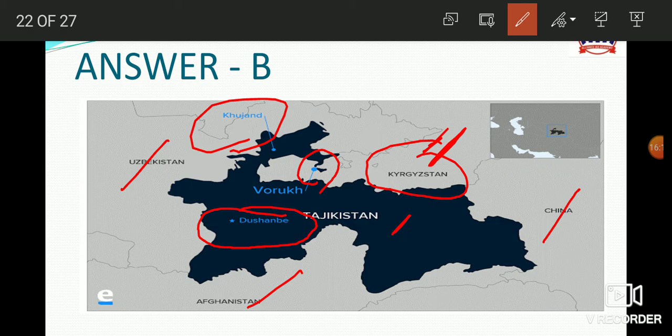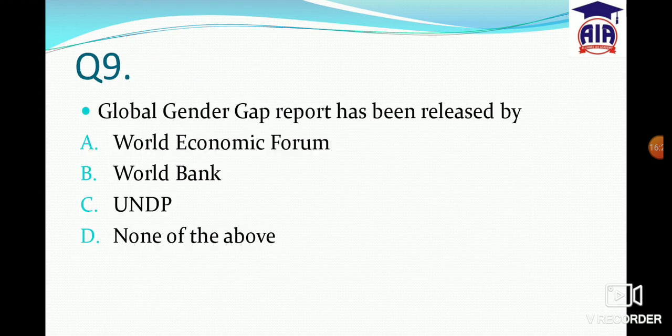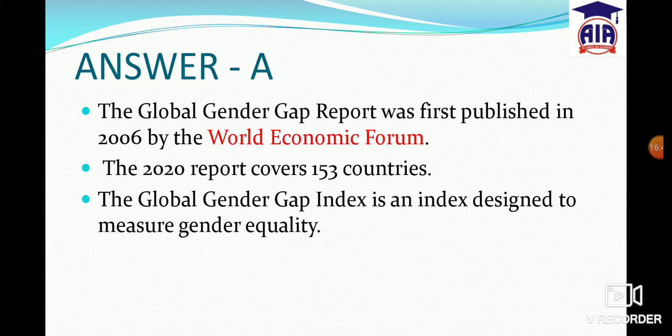Next question: The Global Gender Gap Report is released by — World Economic Forum, World Bank, UNDP, or none of the above. The answer is A — World Economic Forum. This report was first published in 2006, and the 2021 report was also released. It covers 153 countries and measures gender equality.